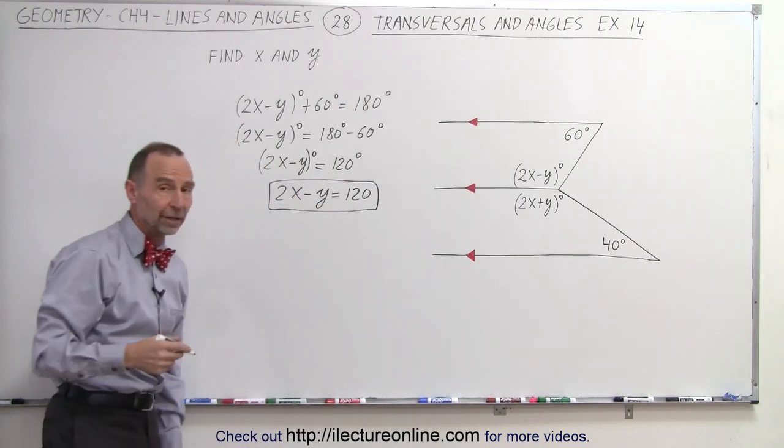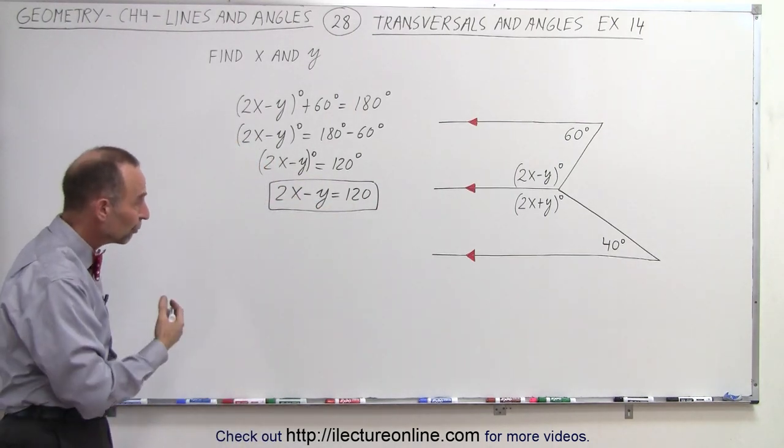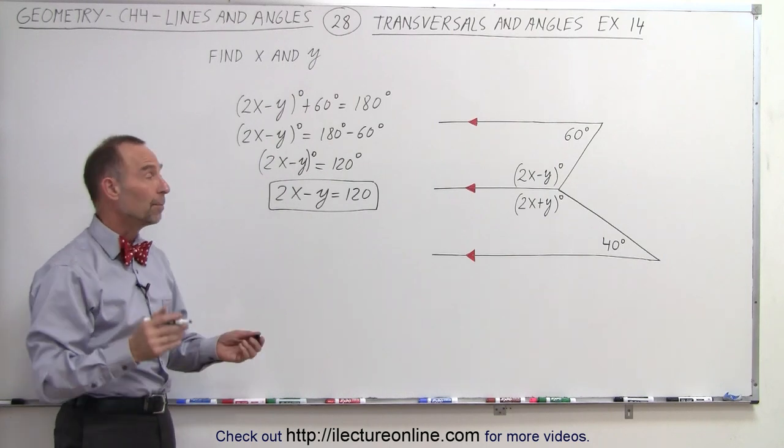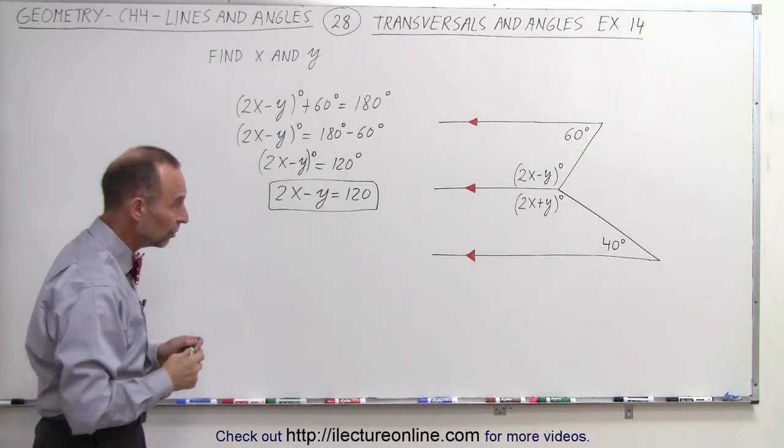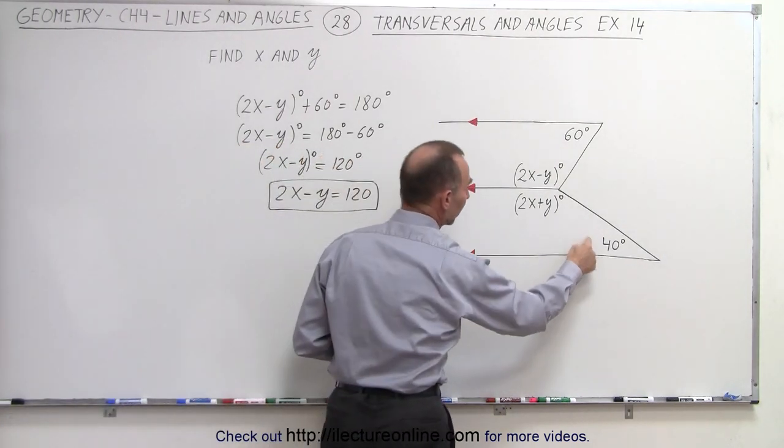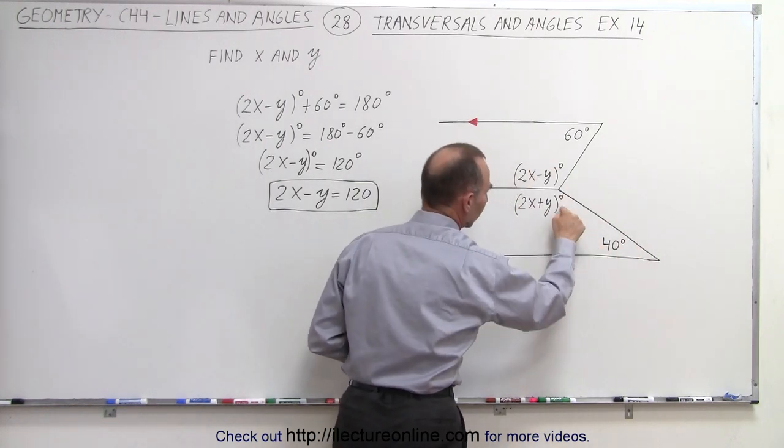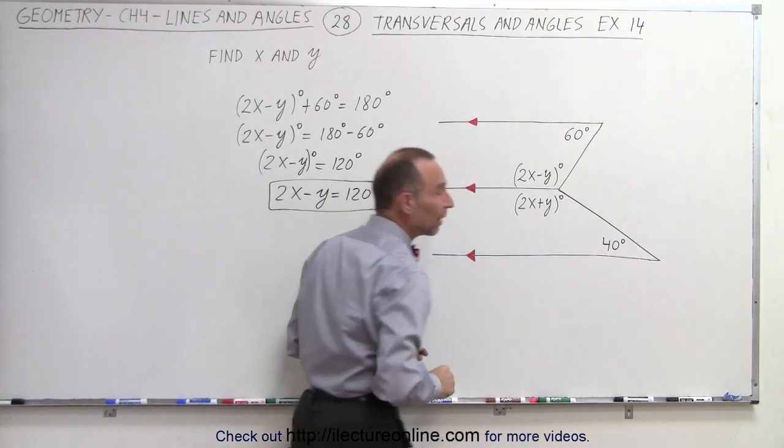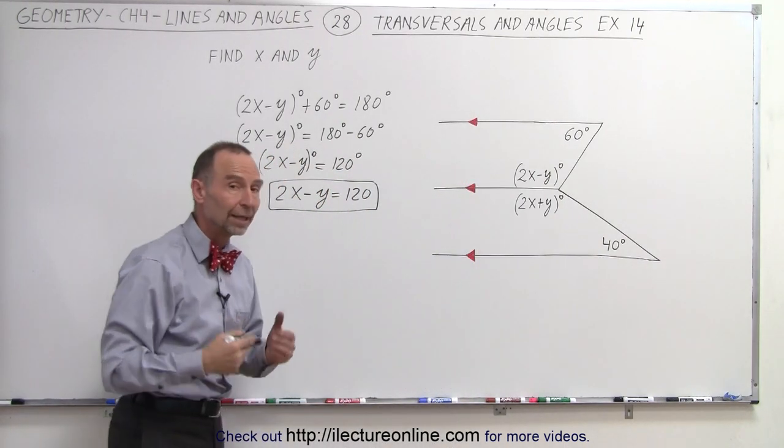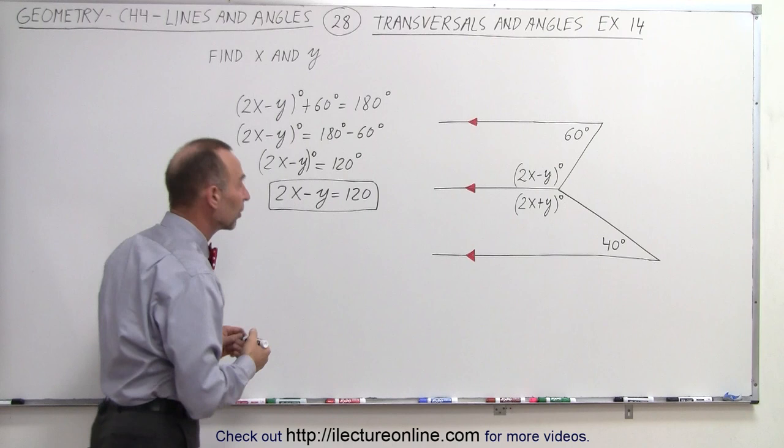Now notice we don't know the value for x or y because we have two variables in one equation. That means we need a second equation, which can be gotten by comparing these two angles to each other. We have two parallel lines, a transversal, that means that those two are consecutive interior angles as well. That means we can add their measures, they must add up to 180 degrees.